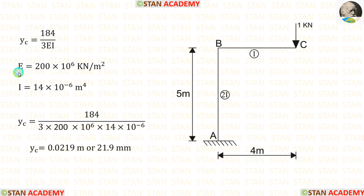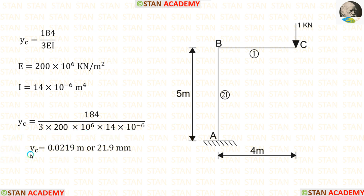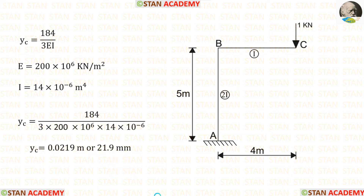In the question, the values of Young's modulus and moment of inertia are given. We apply them and after the calculations, we get the vertical deflection at point C equal to 0.0219 m. Multiplying this value by 1000, we get it in millimeters. Now we are going to end this session. Thank you for watching this video.